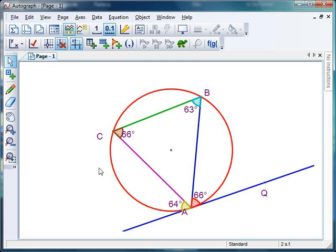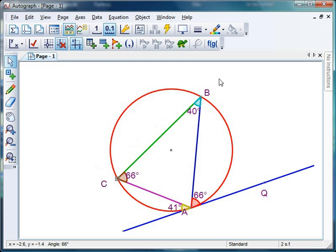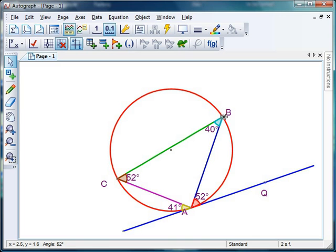And a final little twist we can say to the students is that if we move our points around so that C to B passes through the center, I wonder what size that angle would be. And that gives a nice link into one of the earlier theorems that we looked at there.